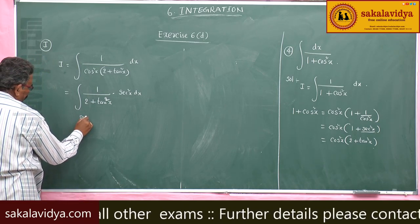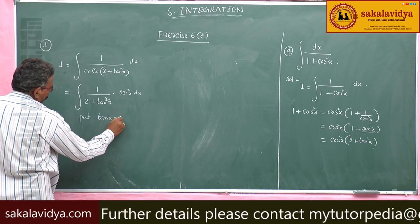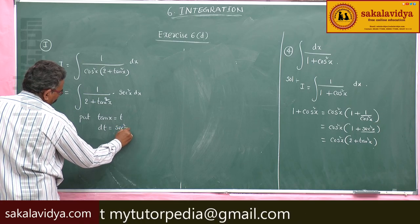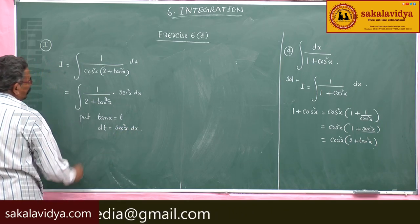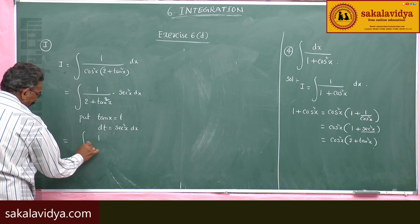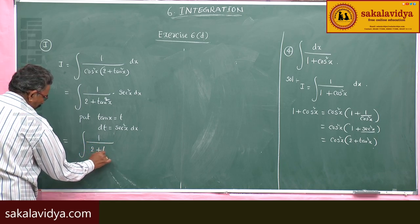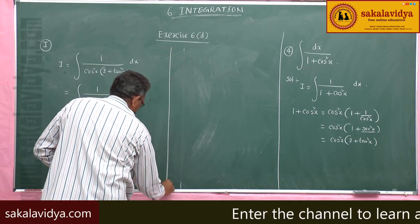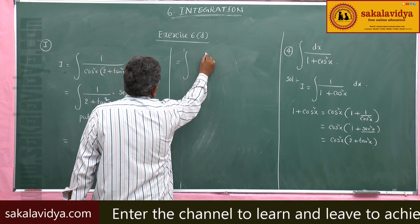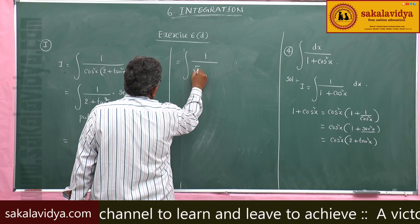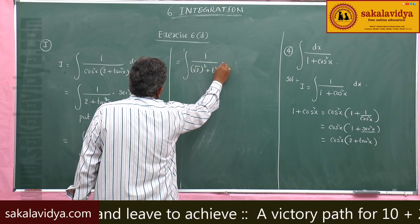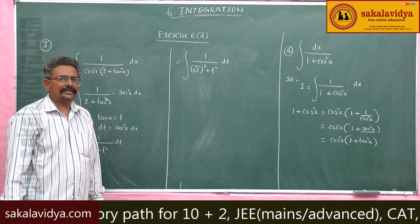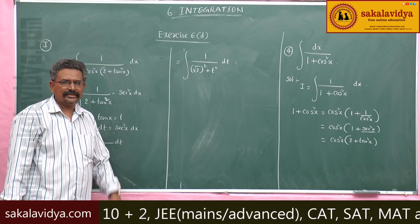Now put tan x equal to t. If tan x equals t, then dt equals secant squared x dx. So this becomes integral 1 by 2 plus t squared dt, which is integral 1 by root 2 squared plus t squared dt. This is in the standard form integral 1 by a squared plus x squared dx equals 1 by a tan inverse x by a plus c.